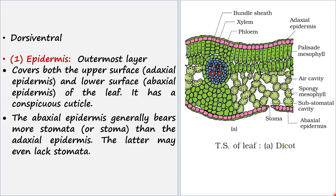Dicot leaves are called dorsiventral, which means their dorsal — that is the back portion — and ventral — that is the front portion — are not the same; they are different.